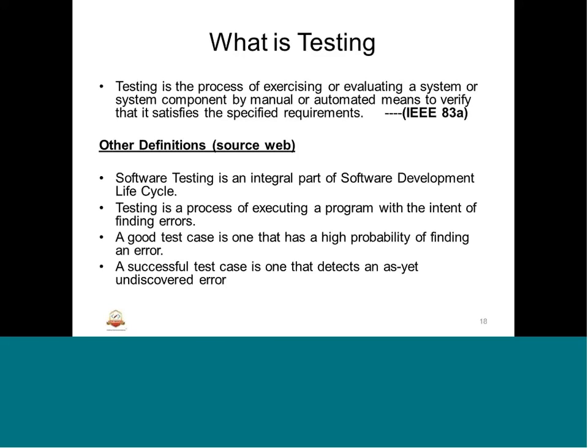What does the process do? It exercises or evaluates a certain system or system component by different means — those means could be automated or manual — which will verify and make sure that it satisfies the given set of requirements. Manual and automated tests will be explained later when we take up the different test methods. This is the IEEE definition of testing; there are other definitions as well on websites which have been referred to for software testing.